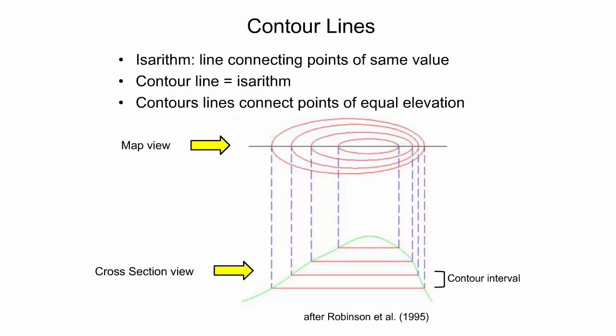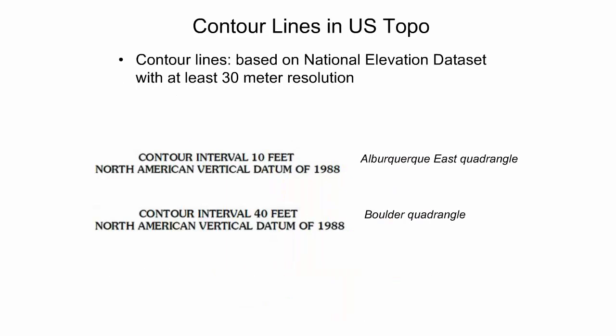The vertical distance or elevation change between the parallel surfaces is the contour interval. Contour lines in US Topo maps are derived from the National Elevation Dataset, which is a seamless raster image dataset available at multiple resolutions but with a minimum resolution of 30 meters. The lower part of the map collar provides information about the basic contour interval and vertical datum used for the contour lines.